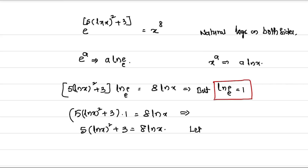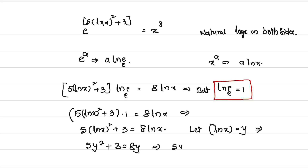Let ln(x) = y. Then it becomes 5y² + 3 = 8y, which implies 5y² − 8y + 3 = 0.